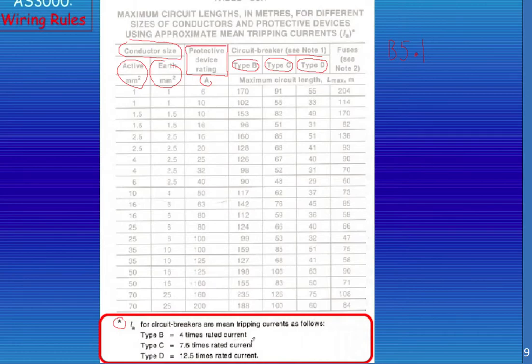And it's also telling us that for type B we have to allow four times rated current, for type C seven and a half, and for type D twelve and a half. And if you don't have circuit breakers but you have fuses, these are for standard HRC fuses.